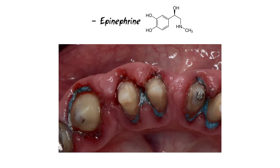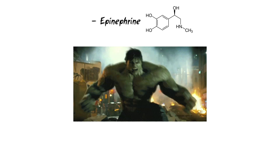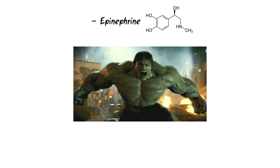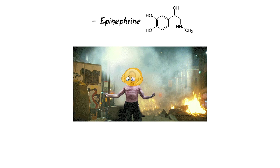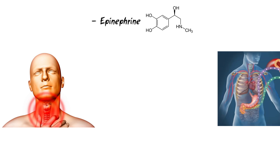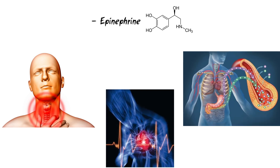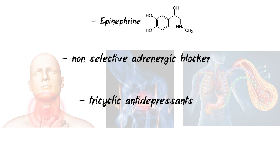Epinephrine provides hemostasis, excellent retraction, and a minimal risk of recession of soft tissues. However, insertion of a cord with epinephrine into a damaged sulcus can trigger epinephrine syndrome: tachycardia, increased respiration rate, increased arterial blood pressure, anxiety, and post-operational depression.